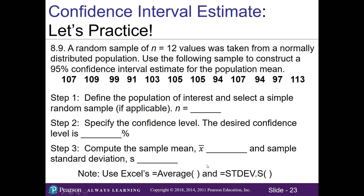Let's go ahead and do problem 9 on our worksheet. A random sample of 12 values was taken from a normally distributed population. Use the following sample to construct a 95% confidence interval estimate for the population mean. In step one, our sample size n is 12 — you could also count the values given. In step two, our confidence level is 95%. In step three, we need to find our sample mean and sample standard deviation using equals AVERAGE and equals STDEV.S — S for sample.